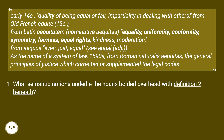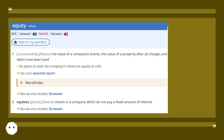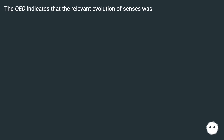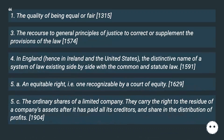What semantic notions underlie the nouns bolded overhead with definition two beneath? The OED indicates that the relevant evolution of senses was: (1) 'the quality of being equal or fair' (c. 1315); (3) 'the recourse to general principles of justice to correct or supplement the provisions of the law' (1574).